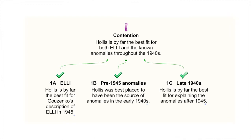The three component parts — what you can see in this top level map, let's call it once again a kind of Socrates map, a very simple diagram — is that these three parts consist of: first, the claim that Roger Hollis more or less uniquely fits the description of Elli given by Guzenko in 1945; second, that Hollis best fits an explanation of the anomalies that took place in MI5 between 1940 and 1945; and third, 1C, that Hollis is by far the best fit for anomalies in the late 1940s after the war. All of this is before Hollis rose to become first deputy director and then director general of MI5.